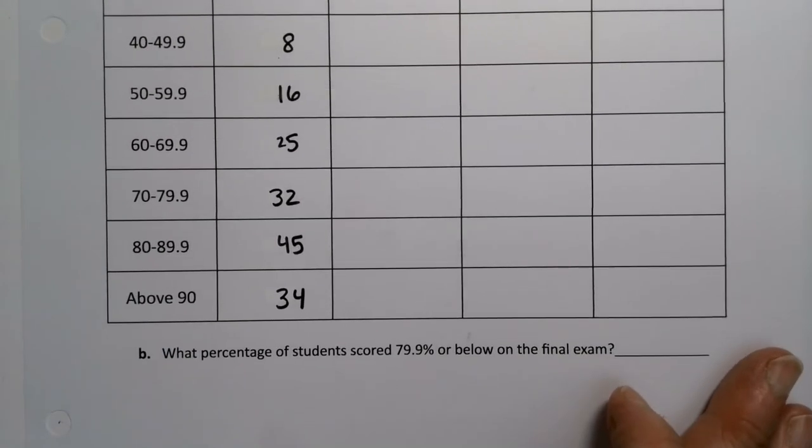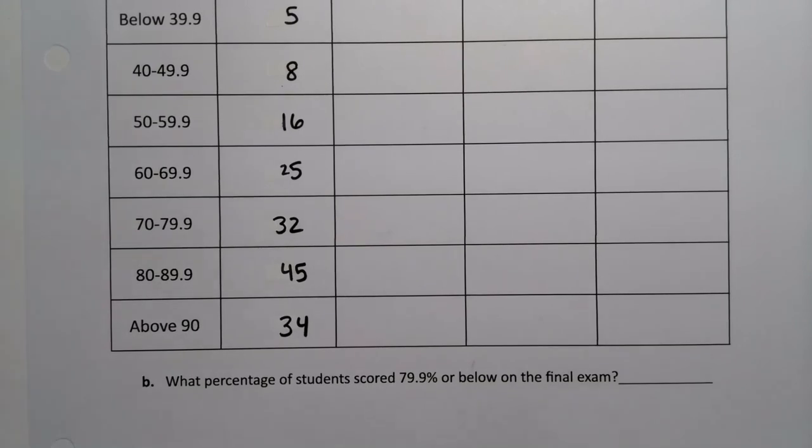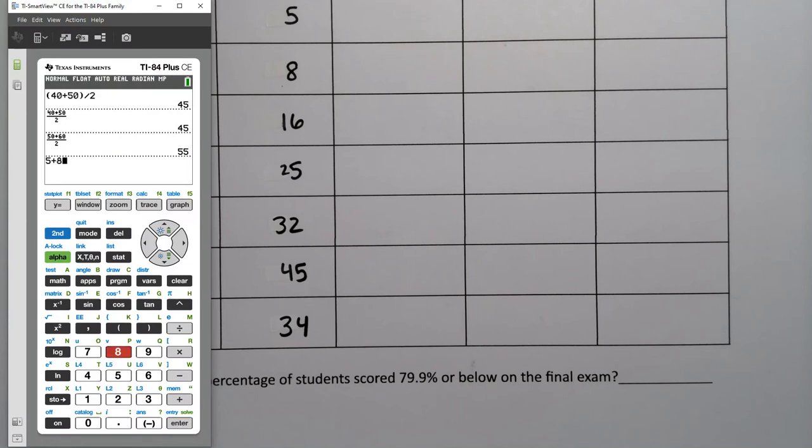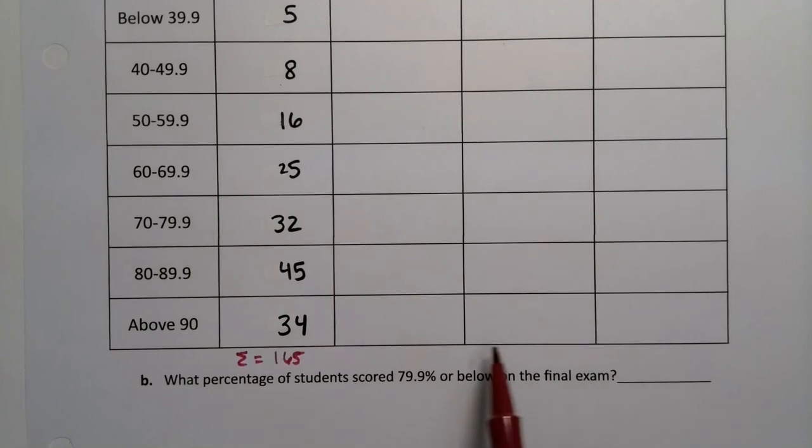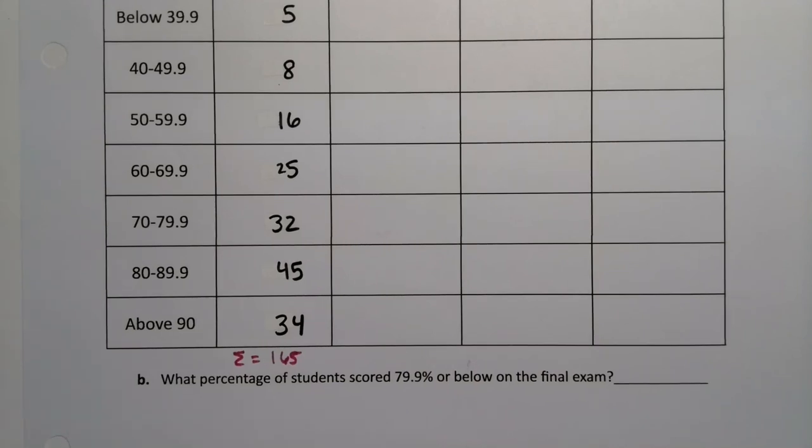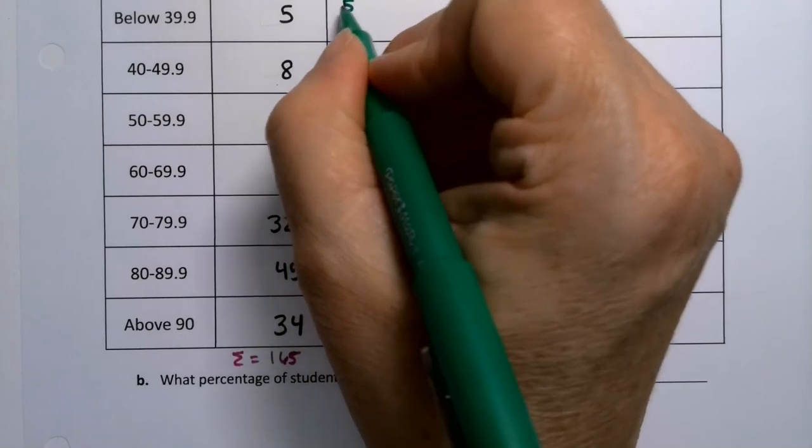Now we want to find the relative frequency. Well, it would help if we knew the total, which I believe we found already, but we can find it again with a calculator. So five plus eight, I'm just adding the frequencies and I find there to be 165. So this total down here is 165.